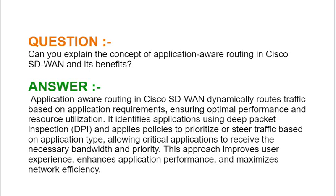Next interview question: Can you explain the concept of application-aware routing in Cisco SD-WAN and its benefits? Application-aware routing in Cisco SD-WAN dynamically routes traffic based on application requirements, ensuring optimal performance and resource utilization. It identifies applications using deep packet inspection (DPI) and applies policies to prioritize or steer traffic based on application type, allowing critical applications to receive the necessary bandwidth and priority. This approach improves user experience, enhances application performance, and minimizes network inefficiency.